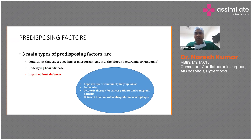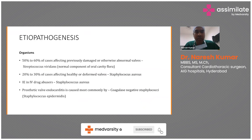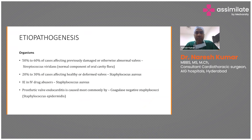Impaired host defenses — such as leukemias, lymphomas, immunotherapy, cytotoxic chemotherapy, or antiretroviral therapy — put patients at very high risk for infective endocarditis. More than 50 to 60 percent of cases are caused by Streptococcus viridans. In 20 to 30 percent of patients, Staphylococcus aureus is responsible — a very aggressive pathogen that can affect normal healthy valves as well as damaged ones.